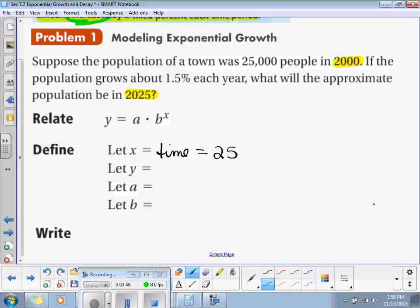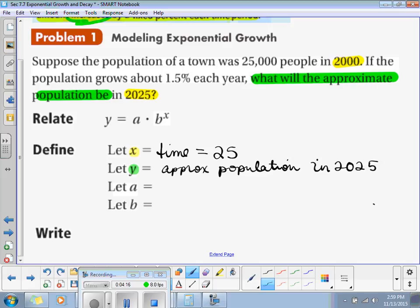Y is what we're solving for. What will the approximate population be? That's our y. So, we are solving for the approximate population in 2025.